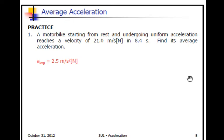We'll look at a few examples. Here we have a motorbike starting from rest. It undergoes uniform acceleration and reaches a velocity of 21.0 meters per second north in 8.4 seconds. To find the average acceleration, it's simply 21 divided by 8.4. That gives you 2.5 meters per second squared. The direction would be the same as the direction of velocity, so that would be north.